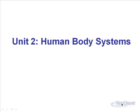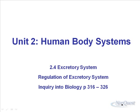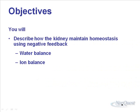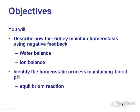Welcome back to Bio3D Prep. We're going to finish off the excretory system with this lecture by talking about some of the regulating factors. In your textbook, it's pages 316 to 326. By the end of this lecture, you'll be able to describe how the kidney maintains homeostasis using negative feedback — specifically water balance and ion balance in the blood. We'll also talk about maintaining blood pH and dialysis technologies.